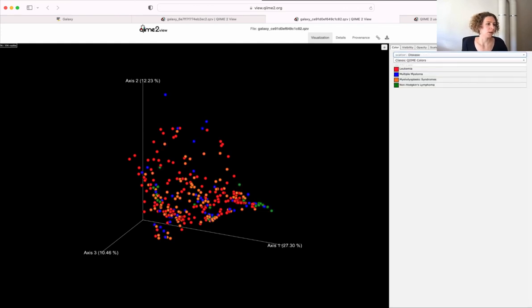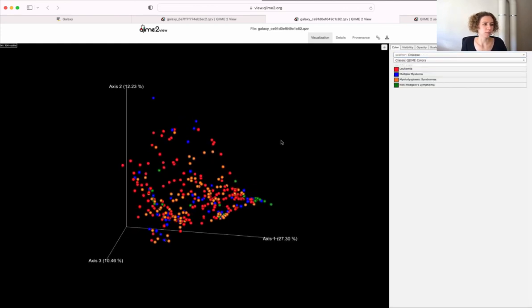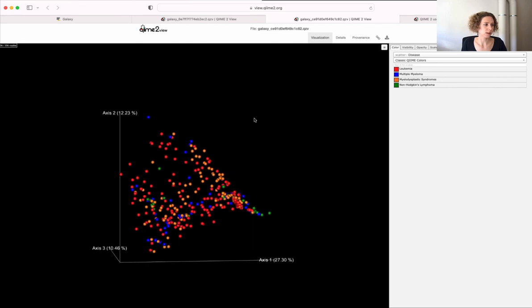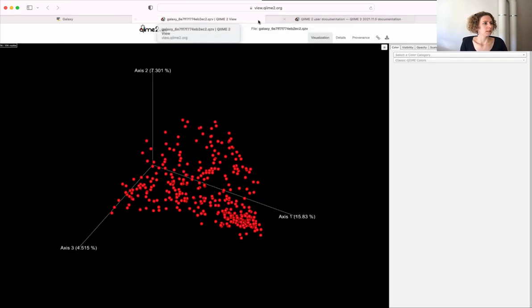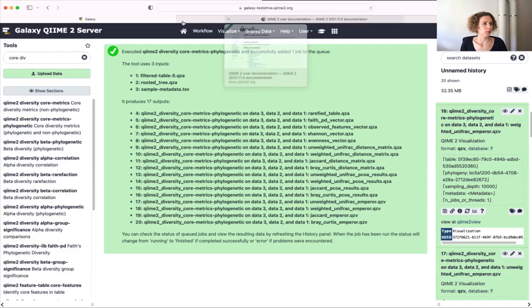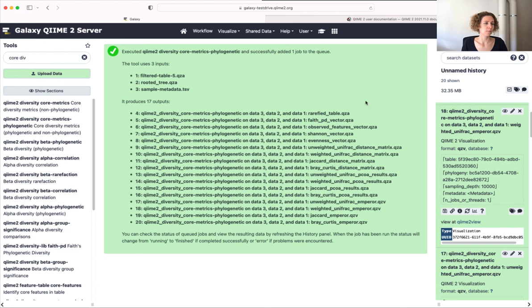So for example, here, let's have a look at how different samples of patients with different diseases cluster. And we don't really see a difference here. Great. So that was a very quick walkthrough through the artifacts generated through the core phylogenetic diversity pipeline.